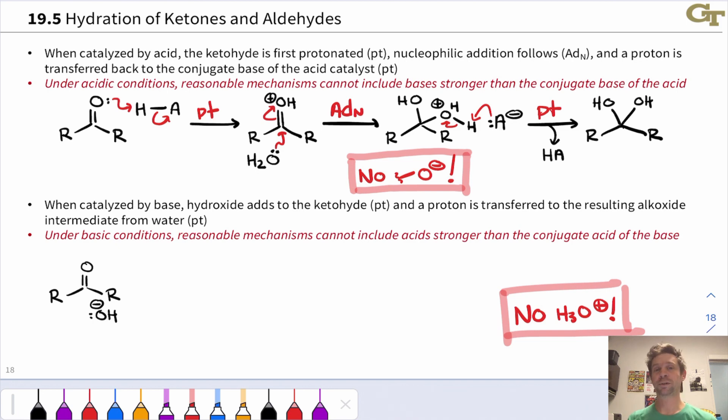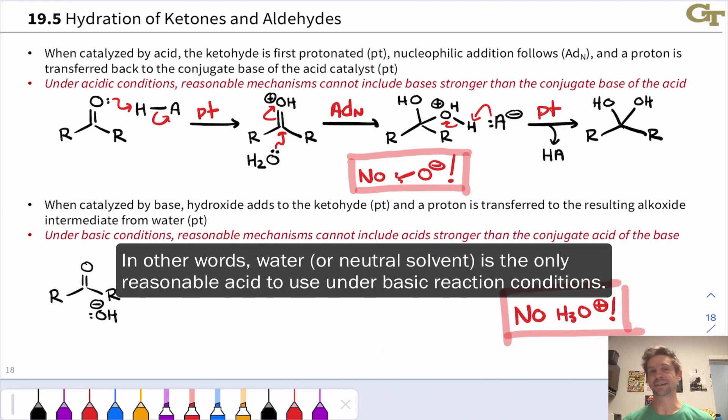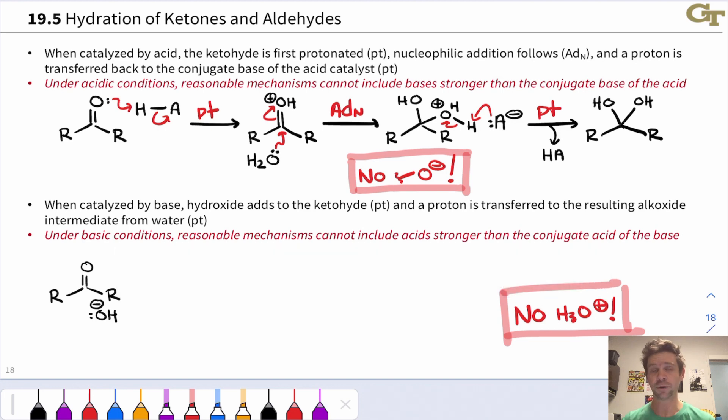No cations more acidic than the conjugate acid or the counter-ion of the base. So here, for example, OH minus came along with a counter-ion, probably an alkali metal cation like K plus or Na plus. Any cation that's more acidic than K plus or Na plus is unreasonable to invoke under these basic reaction conditions. H3O plus is the one that's going to come up most commonly. No H3O plus under these basic conditions. It's because the concentration of H3O plus is negligibly small in this basic solution. This follows from principles of acid-base equilibrium.